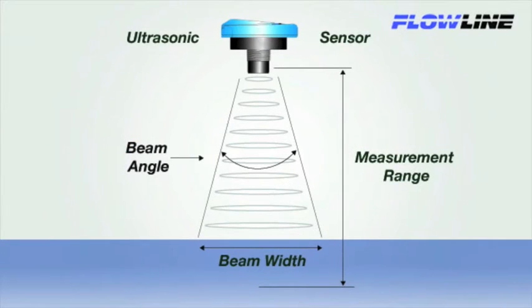These same physics apply to ultrasonic sensors. Here, the path of sound is called beam width. Beam width is largely determined by the beam angle of the transducer, which is typically 8 to 12 degrees on most ultrasonic sensors.